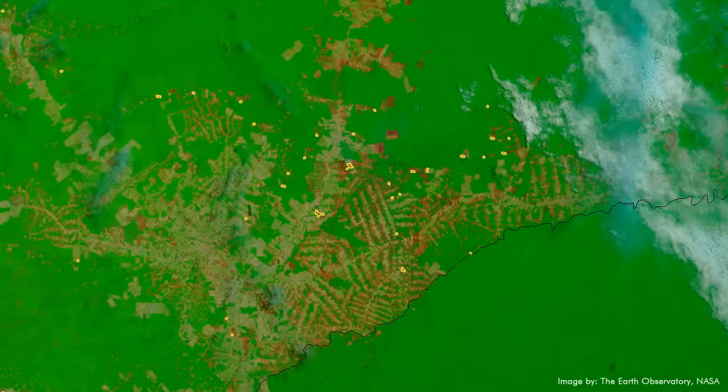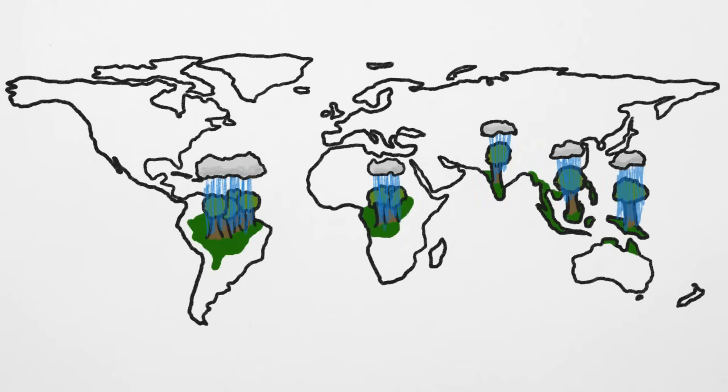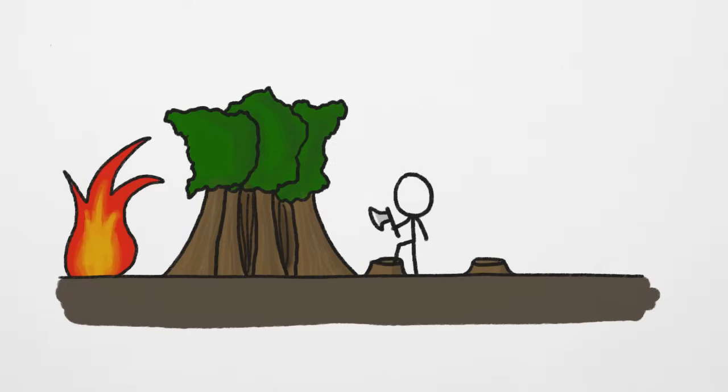Scientists worry that these changes will lead to ever hotter, drier, and more flammable tropics in the coming decades, making things tougher both for the remaining forest and for the people who live there.